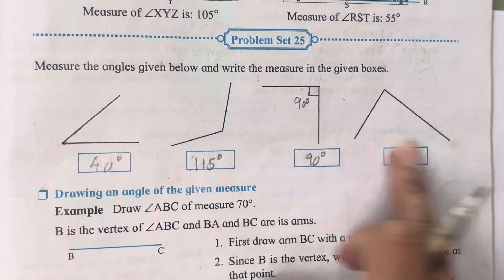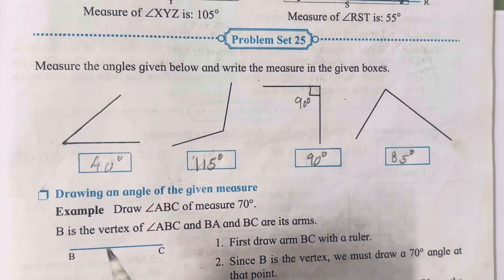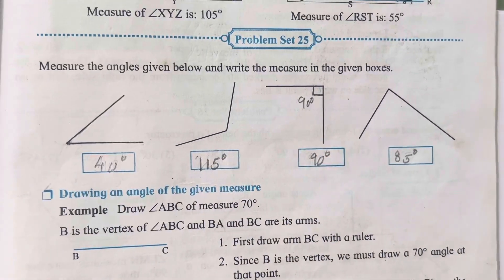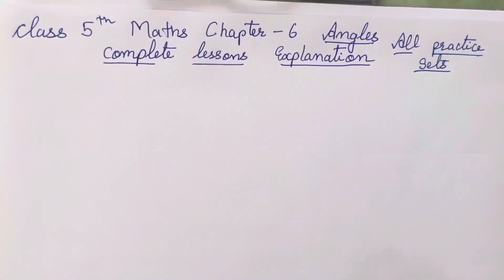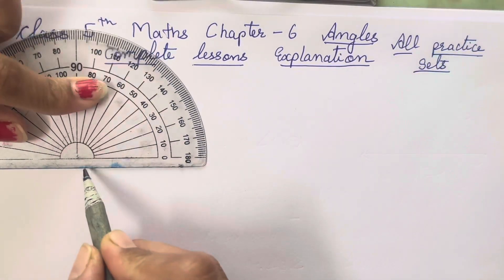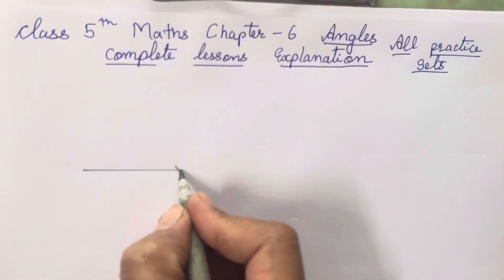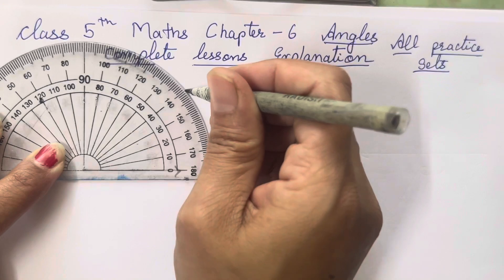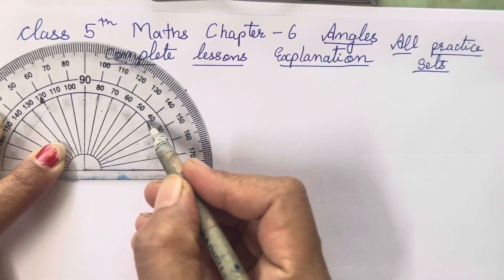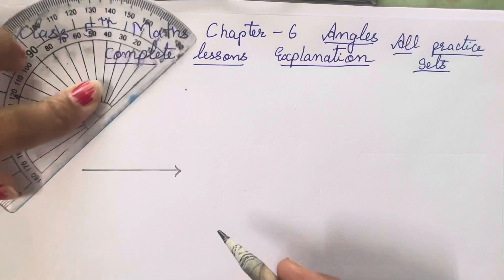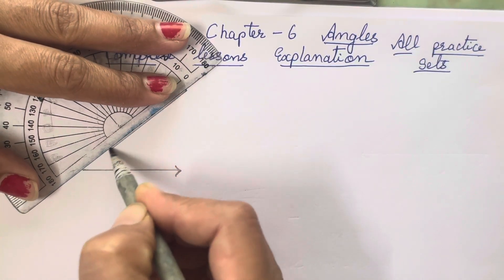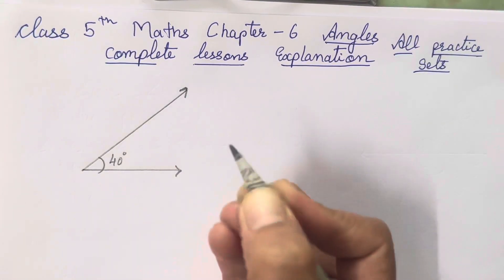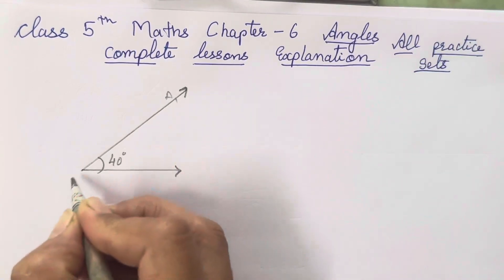Now I will quickly show you how to draw angles, because in the next exercise we also need to draw them. In exams you need to both measure and draw angles. First, draw a base line. Then place the protractor with the center on one end and the zero degree line along the base. Mark a dot at 40 degrees, then join it. Name it ABC — this is your 40 degree angle.